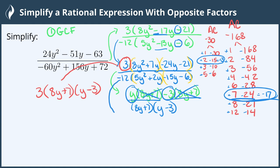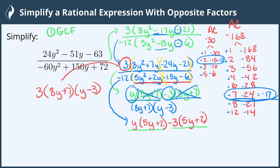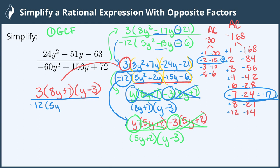Now let's factor the denominator by grouping. The greatest common factor of 5y squared and 2y is y, leaving 5y plus 2. The greatest common factor of negative 15y and negative 6 is negative 3, which leaves positive 5y plus 2. We have two terms with common binomial factor (5y plus 2), and factoring it out leaves y minus 3. So the full factored denominator is negative 12 times (5y plus 2) times (y minus 3).